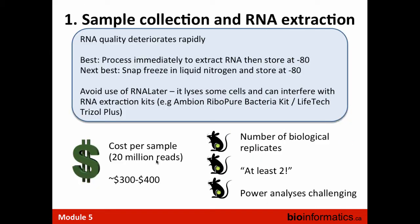A brief mention about sample collection and RNA extraction. One thing we find when working with different groups is a lack of appreciation — particularly from MDs — about what samples we can get and how to store them to ensure high-quality RNA. RNA quality deteriorates rapidly within a sample. The best approach is to process samples immediately, extract RNA, make libraries, and do sequencing. Absent that, extract RNA and store at minus 80. The next best option is snap-freezing with nitrogen, then storing at minus 80.